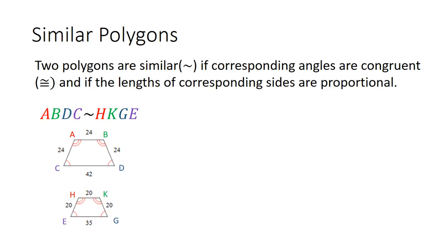In this video, we are going to be learning about similar polygons. Two polygons are similar — that's the symbol for similar, a little squiggly line — if corresponding angles are congruent. Congruent means the same thing as equal, and the symbol for congruent is the equal sign with the similar symbol on top of it, and if the lengths of corresponding sides are proportional.